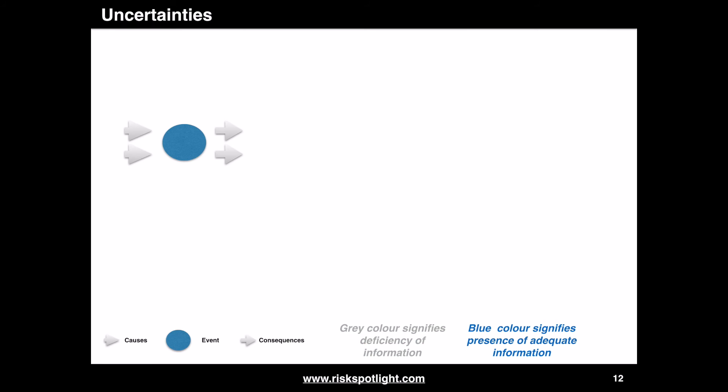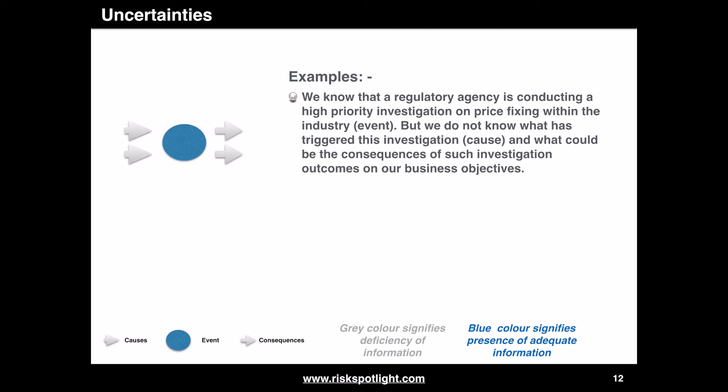The next variation covers the situation where we do have adequate information about the events but we do not have adequate information about causes and consequences. For example, we know that a regulatory agency is conducting a high-priority investigation on price fixing within the industry, but we do not know what has triggered this investigation or what the consequences of such investigation outcomes could be on our business objectives.